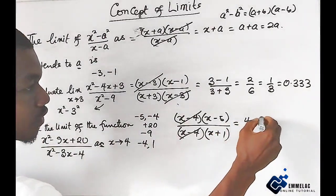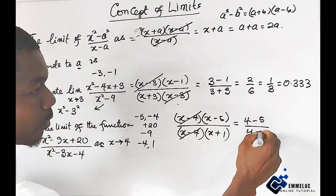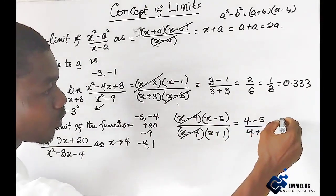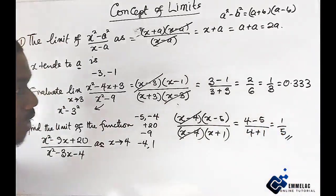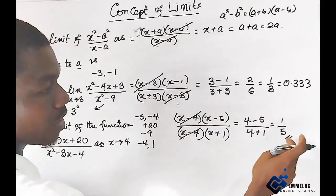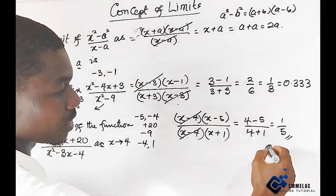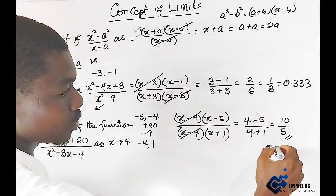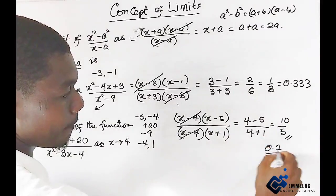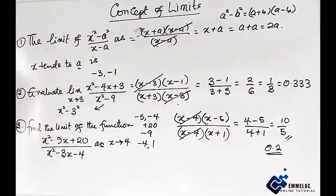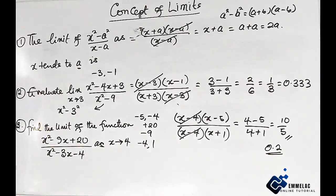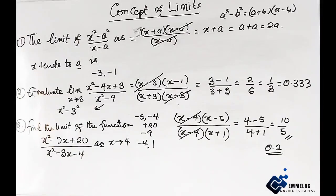As x approaches 4, we have 4 minus 5, all over 4 plus 1, which gives us negative 1 over 5. In decimals this gives us 0.2. This is the solution to the above questions. If you love what I've just done, please subscribe to my YouTube channel and click on the notification bell to be notified of all my videos in physics and mathematics. Thank you and God bless you.